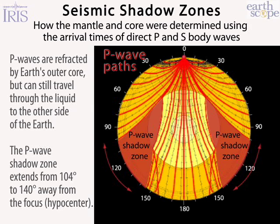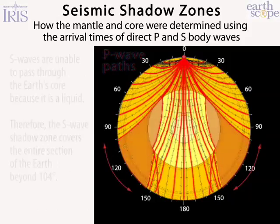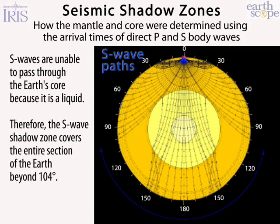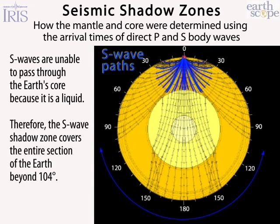S waves travel along the same path as the P waves, but at a slower velocity because they travel in a shearing motion perpendicular to the direction of travel. It's because of this shearing that they are stopped entirely by the liquid core. This creates an even broader shadow zone everywhere beyond 104 degrees.